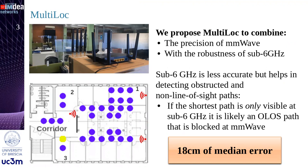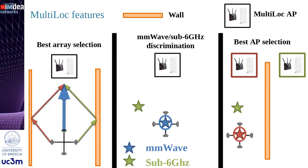Multi-lock has three main steps. The first is the best mmWave array selection, which chooses the array with the minimum time of flight. The second is the discrimination between mmWave and sub-6 GHz localization, where Multi-lock prioritizes mmWave positioning and uses sub-6 GHz only when mmWave is unreliable. The third is the best access point selection mechanism, which chooses the most accurate access point.